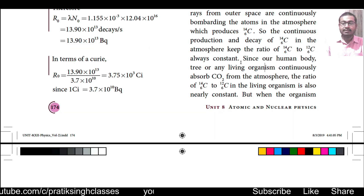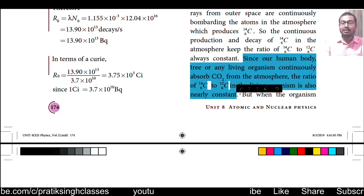Since living organisms continuously absorb carbon dioxide from the atmosphere, the ratio of C¹⁴ to C¹² in any living organism is nearly constant while they are alive. But when an organism dies, it stops absorbing carbon dioxide. Since C¹⁴ starts to decay, the ratio of C¹⁴ to C¹² in a dead specimen decreases over the years.